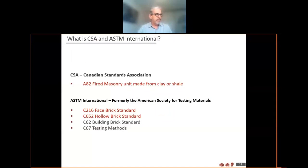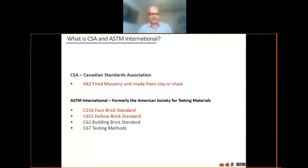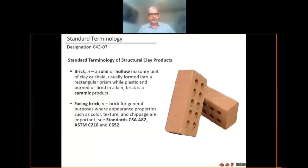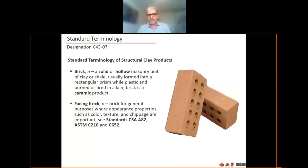CSA standards and how they differ from ASTM — that's what we'll spend the next few minutes looking at. CSA A82 is the one we're most concerned with in Canada, and right now A82-14 is the latest. You'll see when we go through the American standards, all of their types of brick start with FB for facing brick. We used to have that designation in CSA and it's largely disappeared at this point.